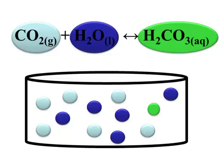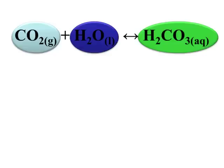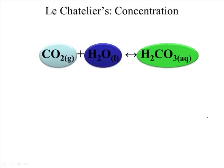How does Le Chatelier's principle affect this? This equilibrium exists in the human body and in the environment. Every time CO2 and water are mixed, a very small amount combines to make carbonic acid. One of the ways you can stress any system, including this reaction, is by changing the concentrations of the species involved. If I add or remove any one of these species, the system will go out of balance and will have to shift to alleviate that stress and rebalance.